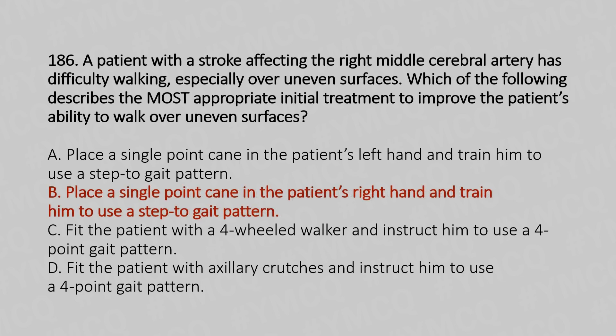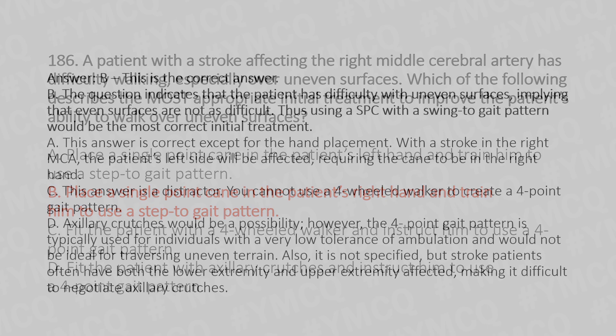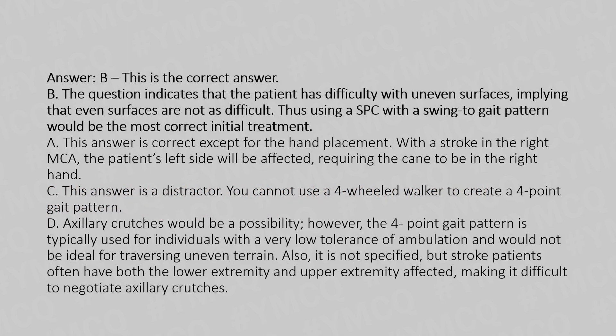Place a single point cane in the patient's right hand and train him to use a step-to gait pattern. The question indicates that the patient has difficulty with uneven surfaces, implying that even surfaces are not as difficult. Thus, using a single point cane with a swing-to gait pattern would be the most correct initial treatment. Option A is correct except for the hand placement — with a stroke in the right MCA, the patient's left side will be affected, requiring the cane to be in the right hand.